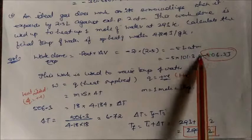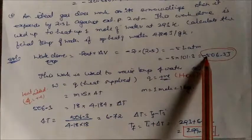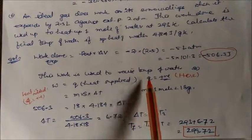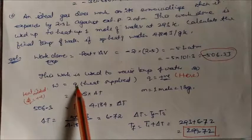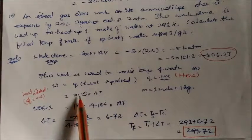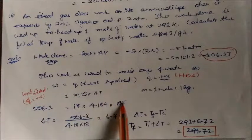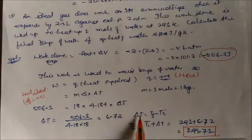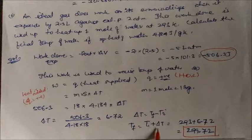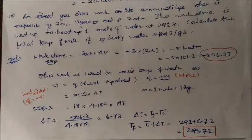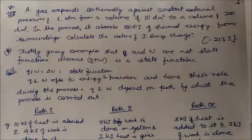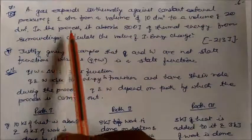Problem 5: Calculate work done when 1 mole of water at 373 K vaporizes against atmospheric pressure (1 atm). Assuming ideal gas behavior, volume of liquid is negligible. Using pV = nRT: V = nRT/p = 1 × 0.0821 × 373 = 30.586 liters. Work w = −p_external × ΔV = −1 × 30.586 liter·atm. Multiplying by 101.3 gives the answer in joules.